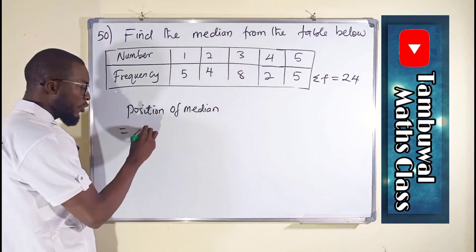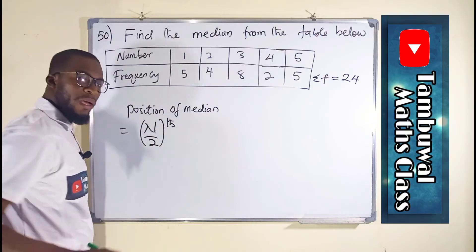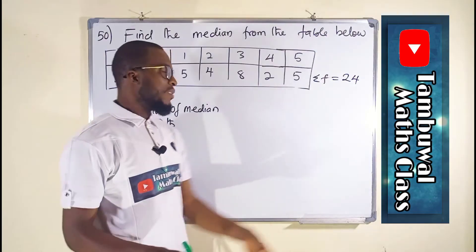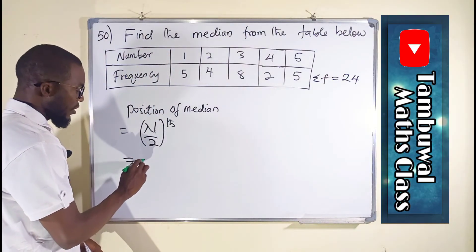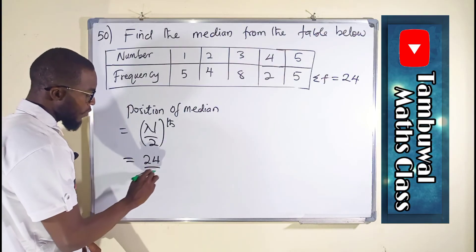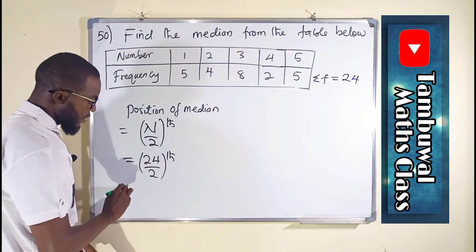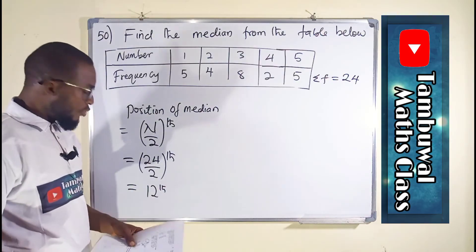Now to find the position of the median, it will be equal to n over 2. N over 2 position. And our n is the summation of our frequency, so this is equal to 24 over 2, which is the 12th position.